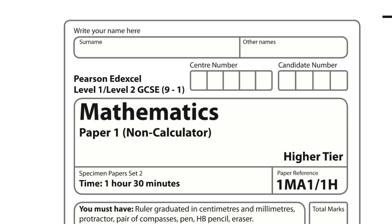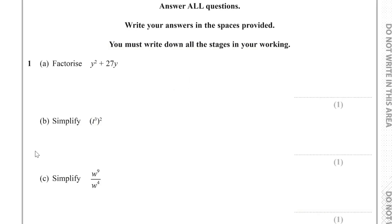This is the Edexcel GCSE 9-1 Maths Paper 1 from the higher tier, from the Specimen Papers Set 2. Question 1.